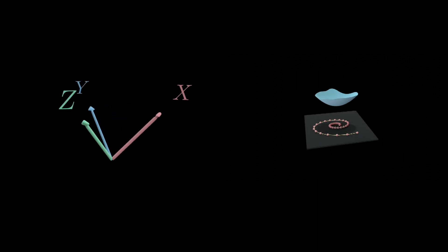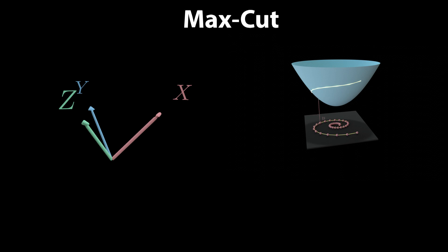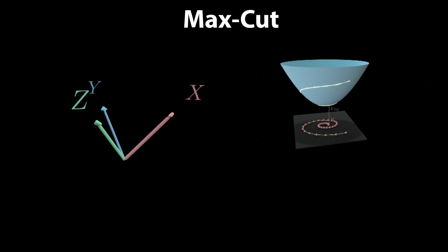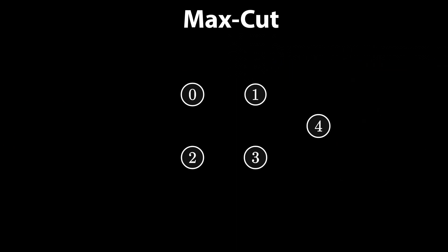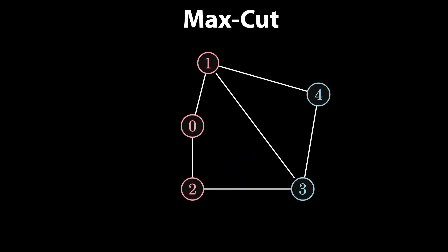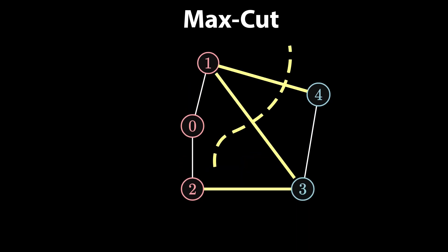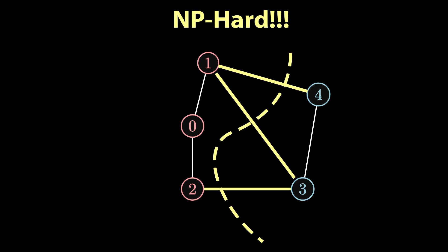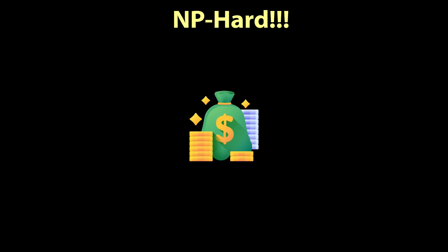In the previous videos, we have seen a few applications of semi-definite programming. Today, we will take a look at a different problem called MaxCut. This is really my favorite application, which is the reason why I left it for last. This innocent-looking problem that has to do with cutting graphs in two pieces is in fact an NP-hard problem, which in layman's terms means that if you could solve it efficiently, you get a million dollar prize.